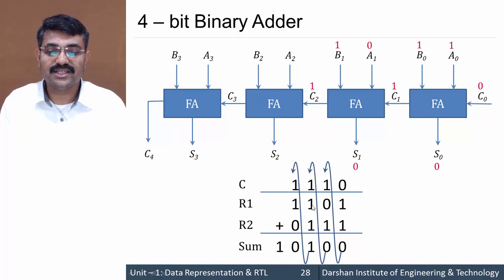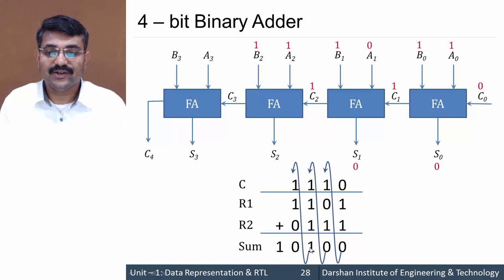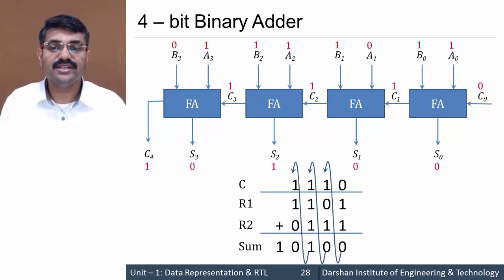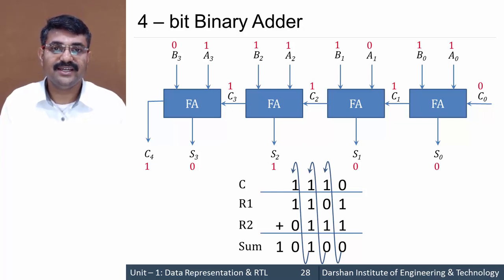For the third full adder, A2 and B2 are both 1, giving sum 1 and carry 1, which propagates to the fourth full adder. There, A3 is 1 and B3 is 0, with carry-in 1, giving S3 equal to 0 and carry C4 equal to 1. This is how a 4-bit binary adder works, and it can be extended to n bits.